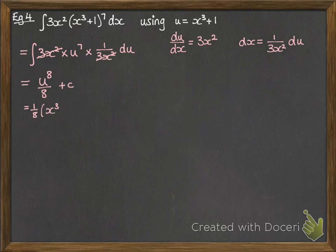So those 3x squareds cancel out, obviously. And then we're just integrating u to the 7 with respect to u. And that goes to u to the 8 over 8. And then we substitute back in our x cubed plus 1 as u to get our final answer.